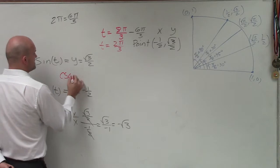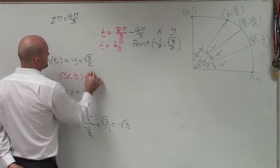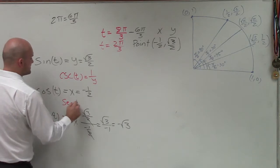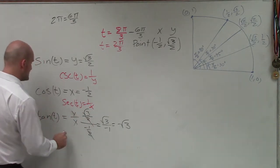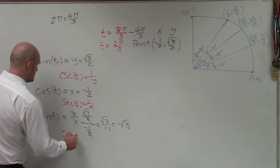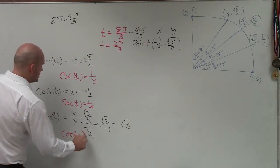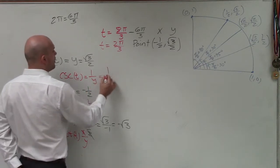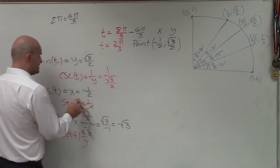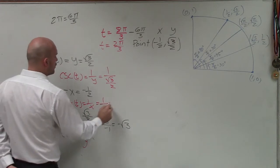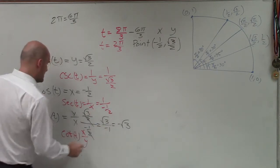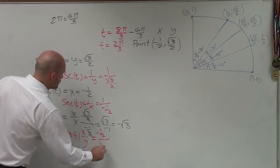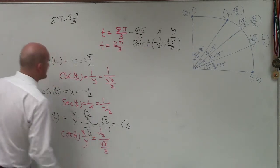Now to go and evaluate my reciprocal functions, that's going to be reciprocal of sine is cosecant of t, which equals 1 over y. The reciprocal of cosine is secant of t, which equals 1 over x. And the reciprocal tangent is cotangent of t, which equals x over y. So the cosecant of y is now going to be 1 over the square root of 3 over 2. The secant is going to be 1 over negative 1 half. And the cotangent is going to equal negative 1 half over square root of 3 over 2.